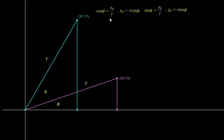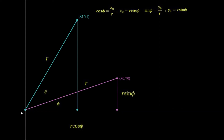From simple trigonometry, cos φ = x₀ / r, so x₀ = r·cos φ — that's this length here. Similarly, sin φ = y₀ / r, so y₀ = r·sin φ — that's this height here. So we now have two of the four lengths we're looking for.